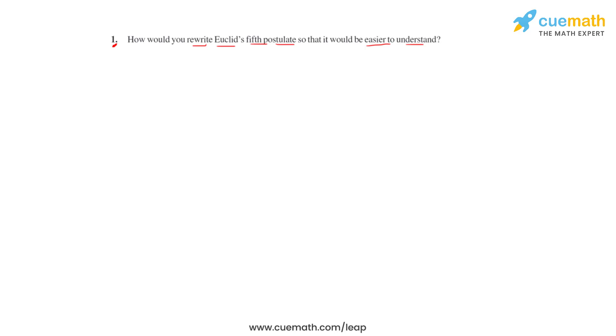To understand it in an easier way, let's have a figure on the board. Now L is a line and P is a point which is not lying on line L.